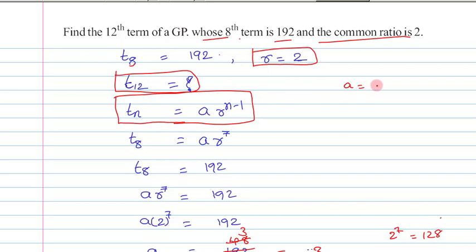Here a is the first term, r is the common ratio. We know the value of r as 2, but we don't know the value of a.